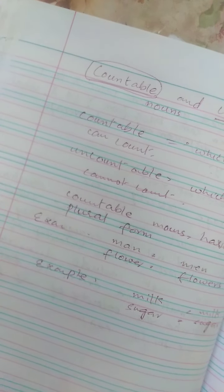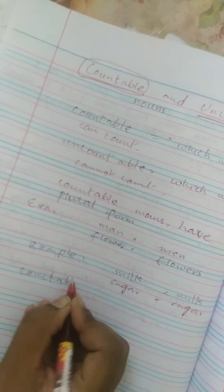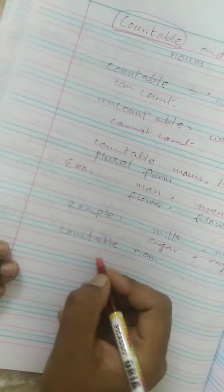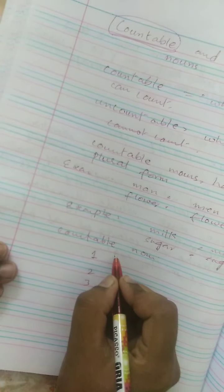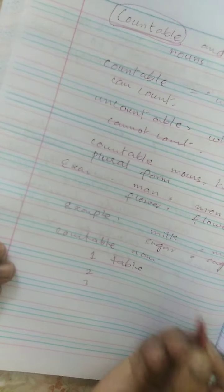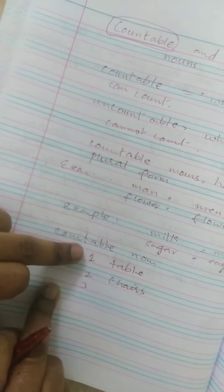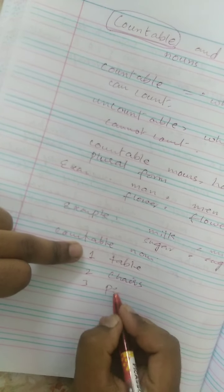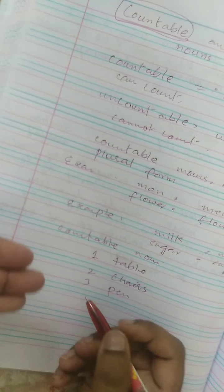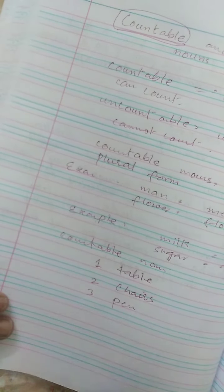Another example is that with countable noun, we can write one, two or three before countable nouns. But we cannot write the number before uncountable nouns.